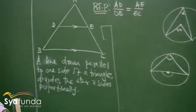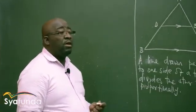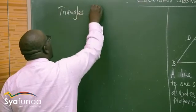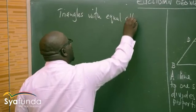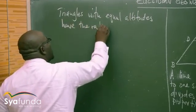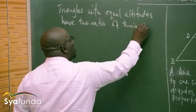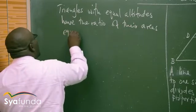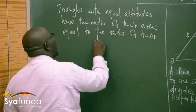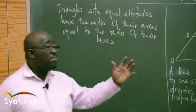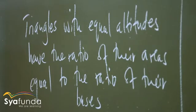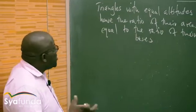There's a theorem that you need to understand before we do the proportionality theorem: triangles with equal altitudes have the ratio of their areas equal to the ratio of their bases. Let's put a diagram so that will make sense.